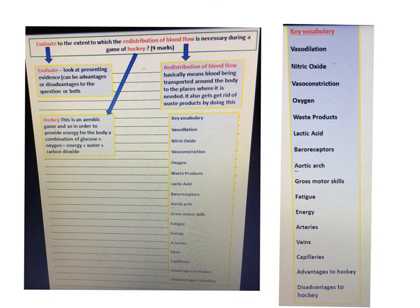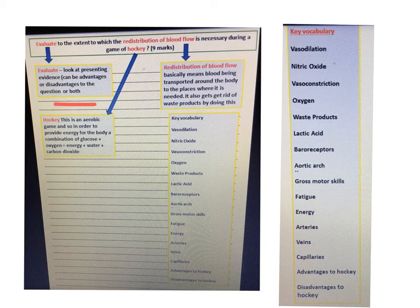We're now going to look at a nine-mark exam question: 'Evaluate the extent to which the redistribution of blood flow is necessary during a game of hockey.' A few prompts are provided to help, highlighting what 'evaluate' means, the aerobic nature of hockey, and why oxygen is needed during the activity.